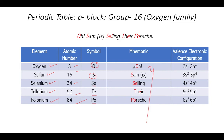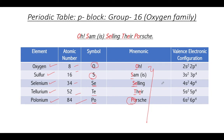The mnemonic for Group 16 is: 'Oh Sam is selling their Porsche.' O is for oxygen, Sam's S is for sulfur, from 'selling' you take Se for selenium, from 'there' you pick Te for tellurium, and from 'Porsche' you take Po for polonium. The valence electron configurations: 2s²2p⁴ for oxygen, 3s²3p⁴ for sulfur, 4s²4p⁴ for selenium, 5s²5p⁴ for tellurium, and 6s²6p⁴ for polonium.